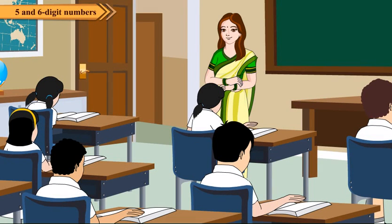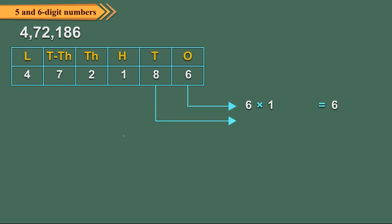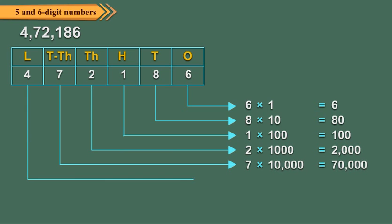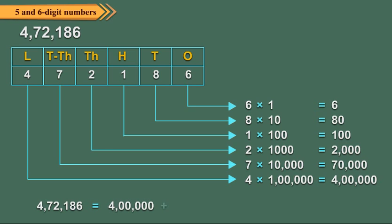When we write a number as the sum of the place values of its digits, it is called the expanded form. Let us write the number 472186 in the expanded form. We first find the place value of each digit. Thus, the expanded form of 472186 is 400000 plus 70000 plus 2000 plus 100 plus 80 plus 6.